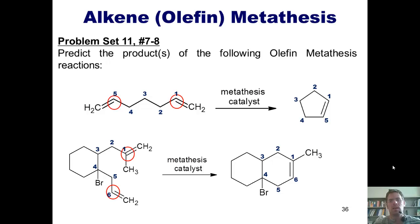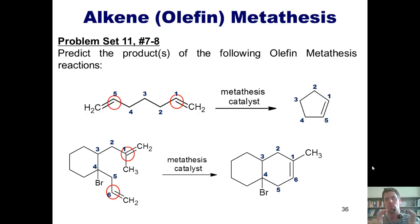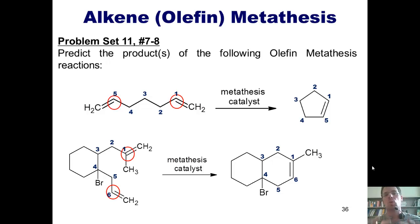One thing I want you to note is that when I contrast these reactions with the ones in the previous slide, these reactions all form rings that weren't present in the starting materials. That is what occurs when you have two double bonds tethered together by a chain of carbons and hydrogens — when they go together, they form a ring. Thus, olefin metathesis done on two alkenes in the same molecule is often called ring-closing metathesis. When done on two alkenes on separate molecules and stitching them together, it's called cross-metathesis.